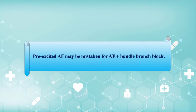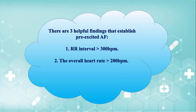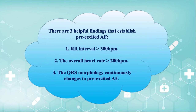Pre-excited AF may be mistaken for AF with bundle branch block, and sometimes it is difficult to differentiate these two arrhythmias. There are three helpful EKG findings that establish pre-excited AF: 1. The presence of very short RR intervals equal to or greater than 300 beats per minute is highly in favor of pre-excited AF — in conventional AF, RR intervals are almost always more than five small squares. 2. An overall heart rate more than 200 beats per minute favors pre-excited AF, as conventional AF is most often less than 200 bpm. 3. The QRS morphology continuously changes in pre-excited AF. This triad is present in our case, confirming pre-excited AF as the cause of tachyarrhythmia.